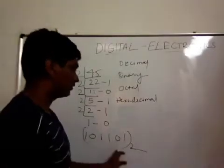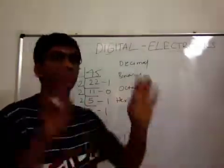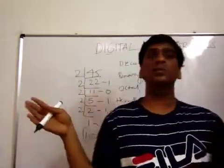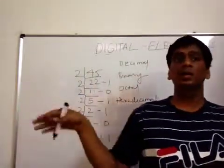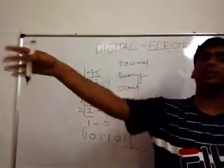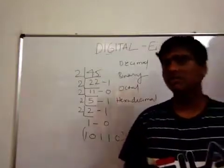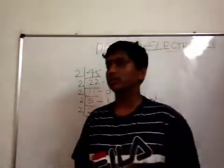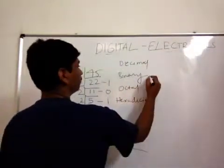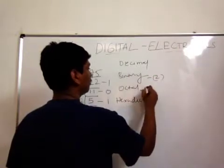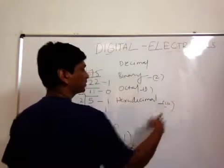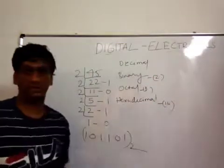It is just dividing the given number, writing the remainders, and giving it the proper base radix. This is a simple conversion. For binary the radix is 2, for octal the radix is 8, and for hexadecimal the radix is 16.